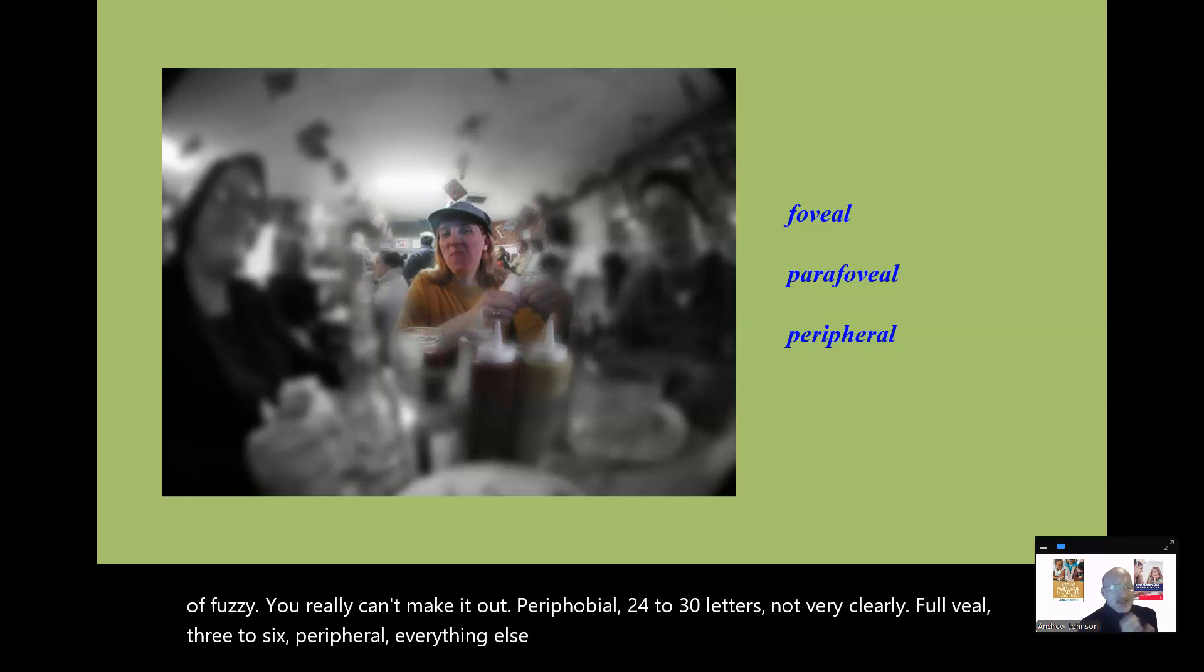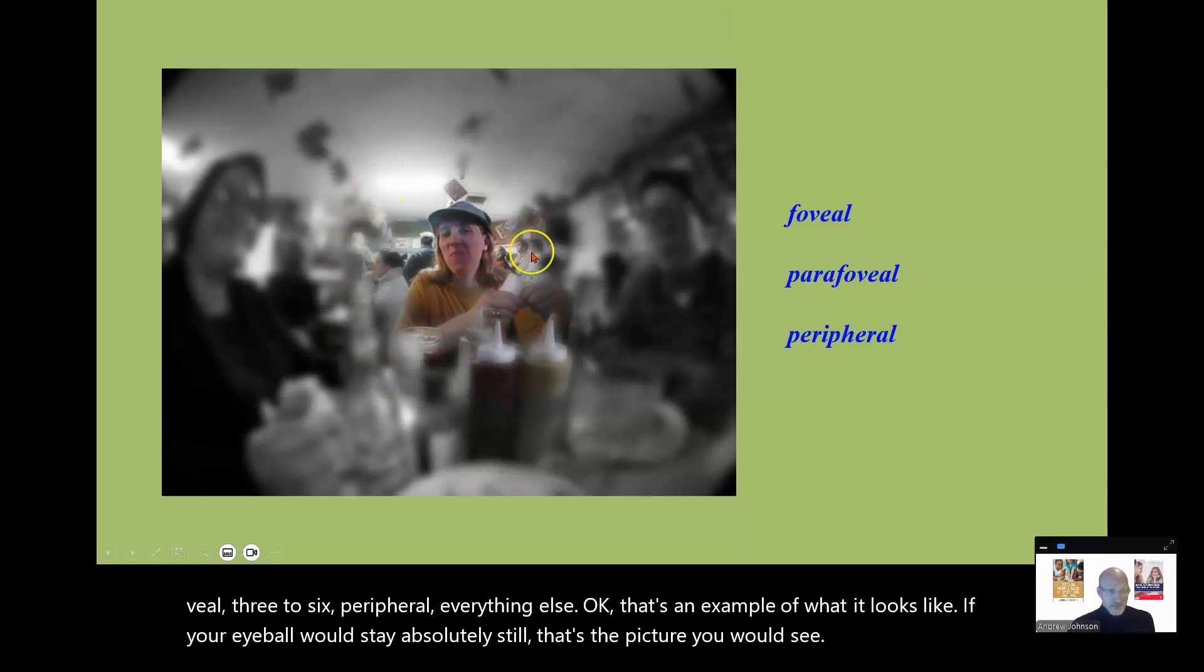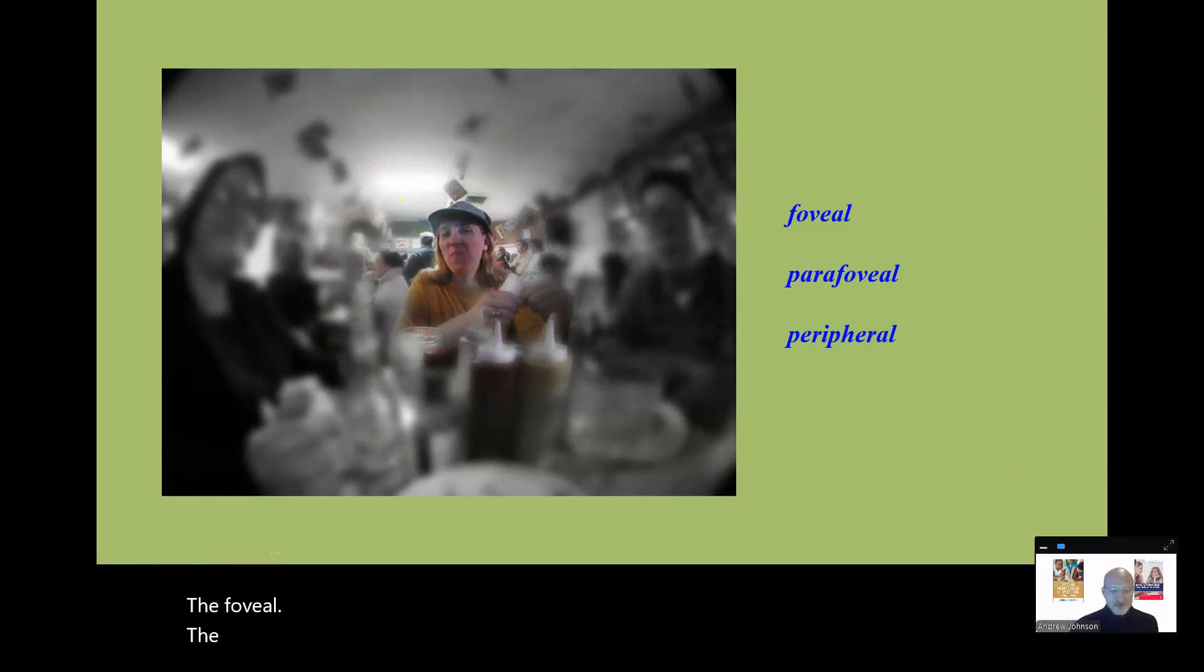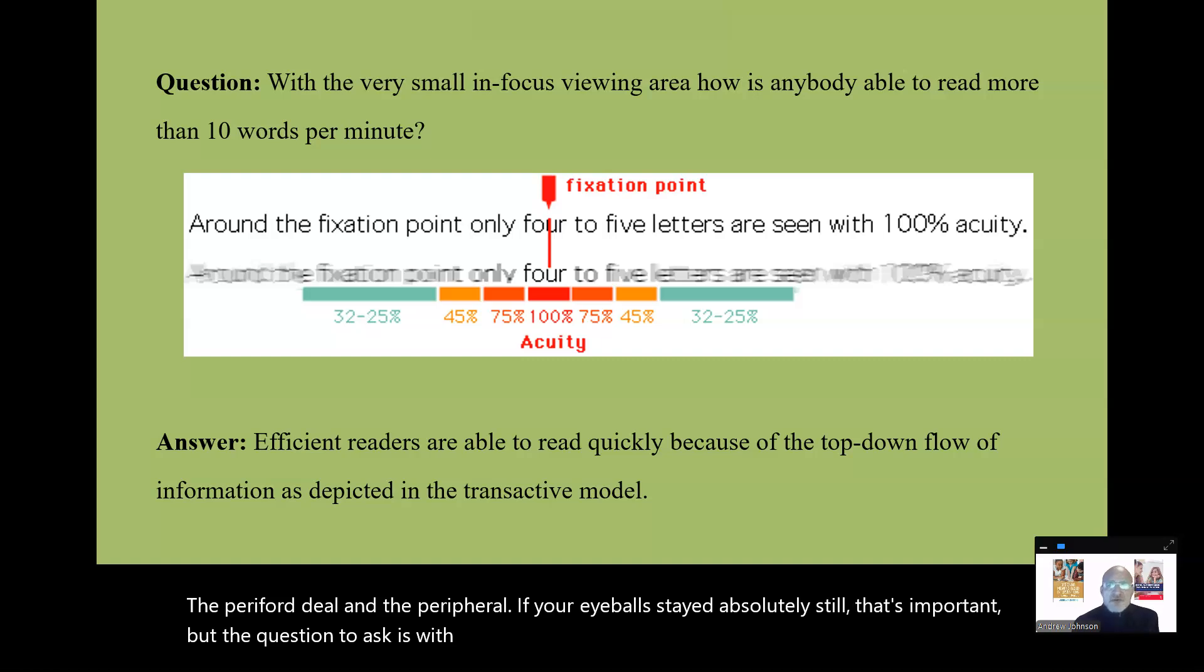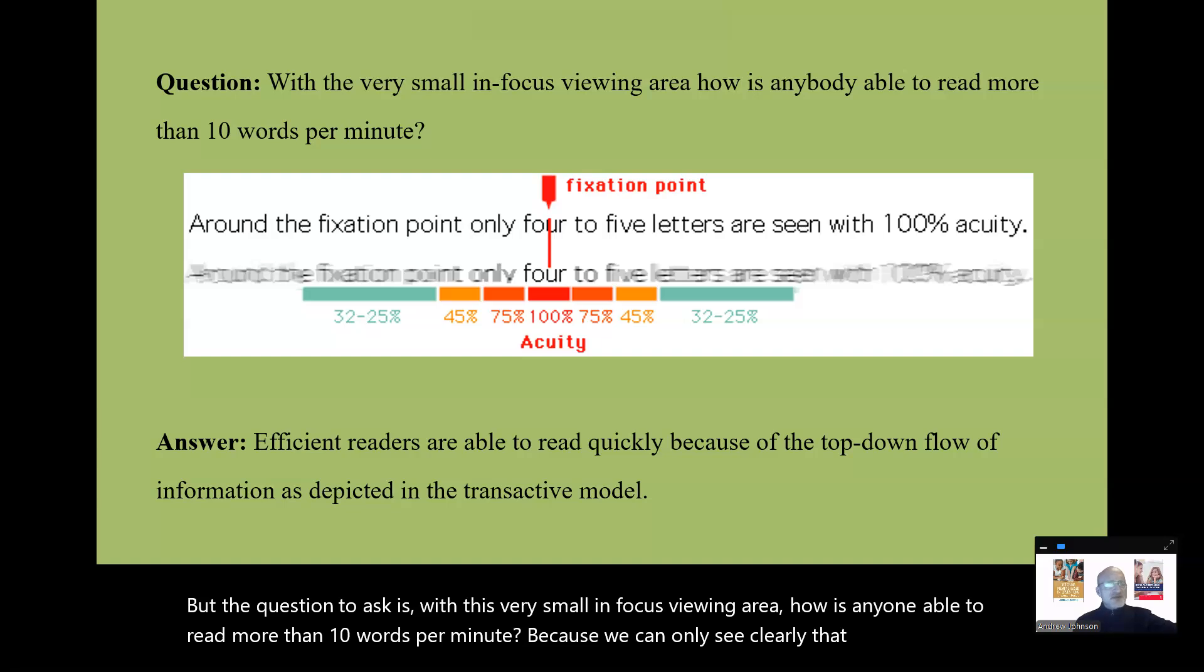That's an example of what it looks like. If your eyeball would stay absolutely still, that's the picture you would see. The foveal, the parafoveal, and the peripheral, if your eyeball stayed absolutely still. That's important. But the question to ask is, with this very small in-focus viewing area, how is anyone able to read more than 10 words per minute? Because we can only see clearly that little three to six letters at a time.